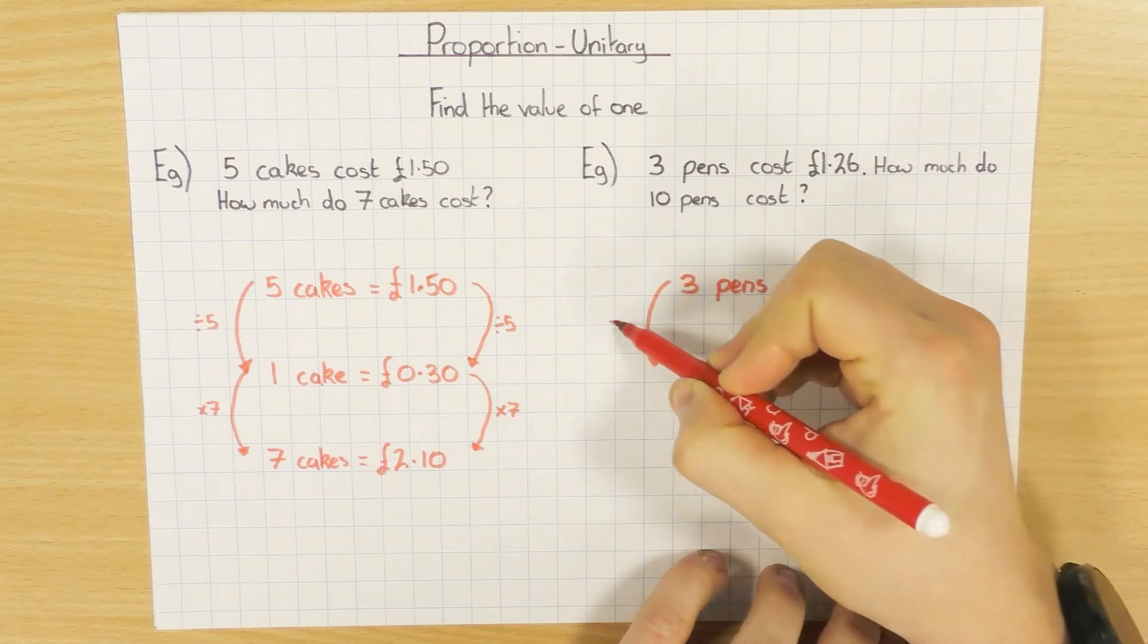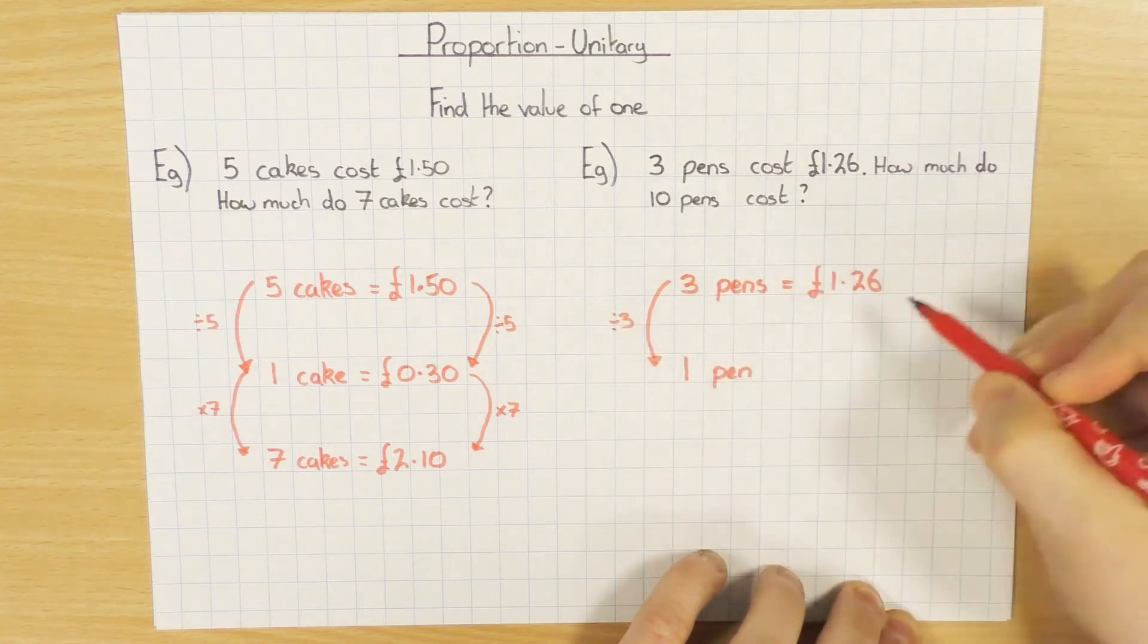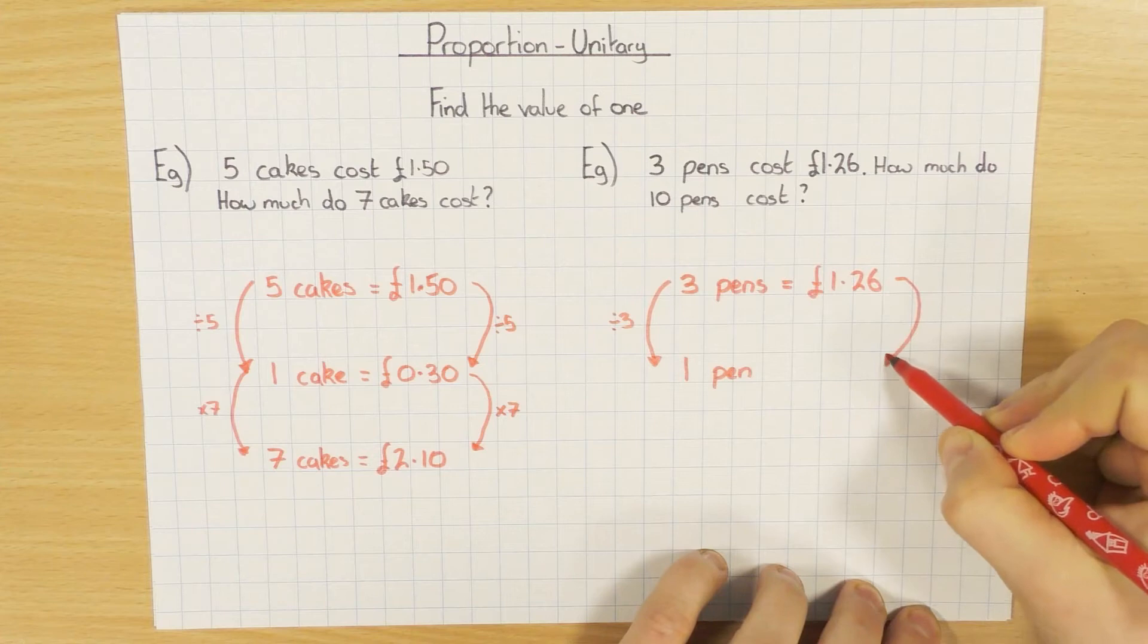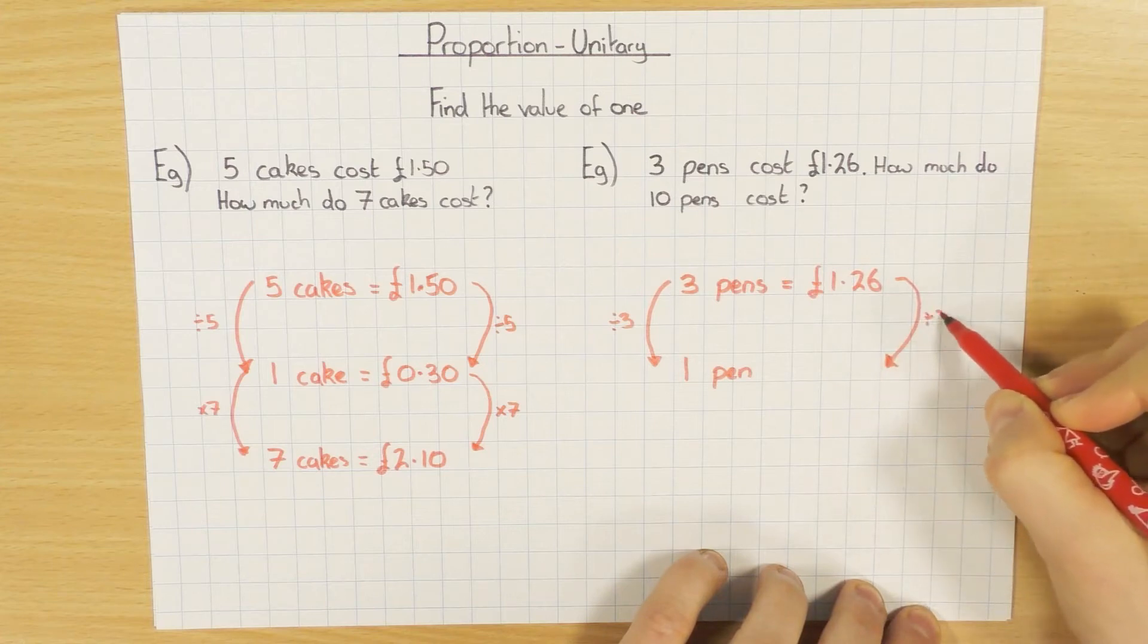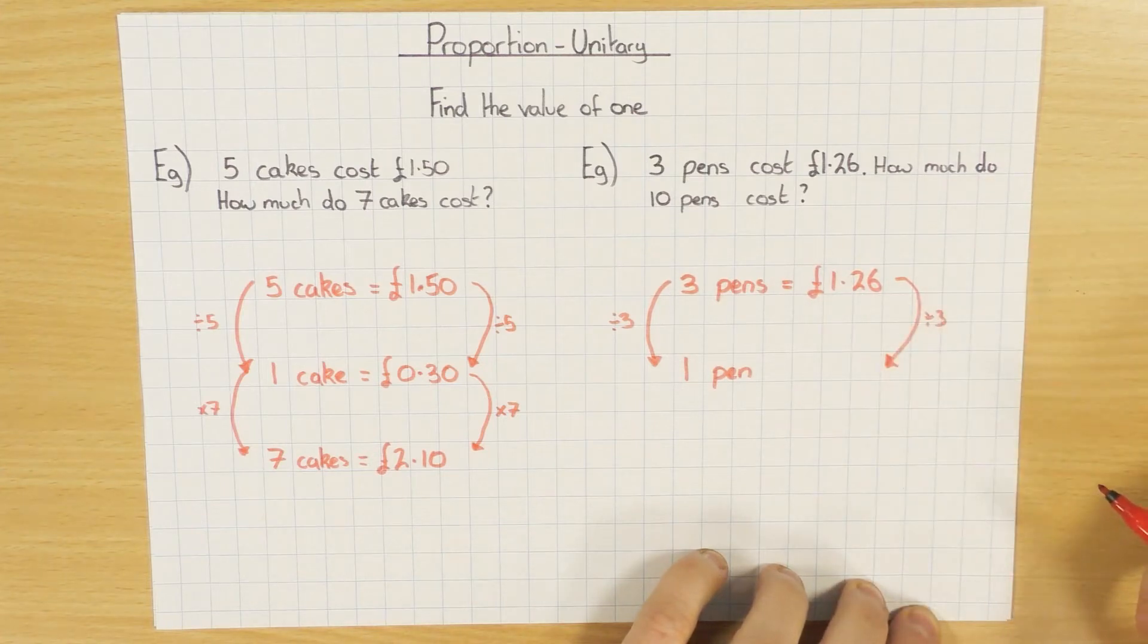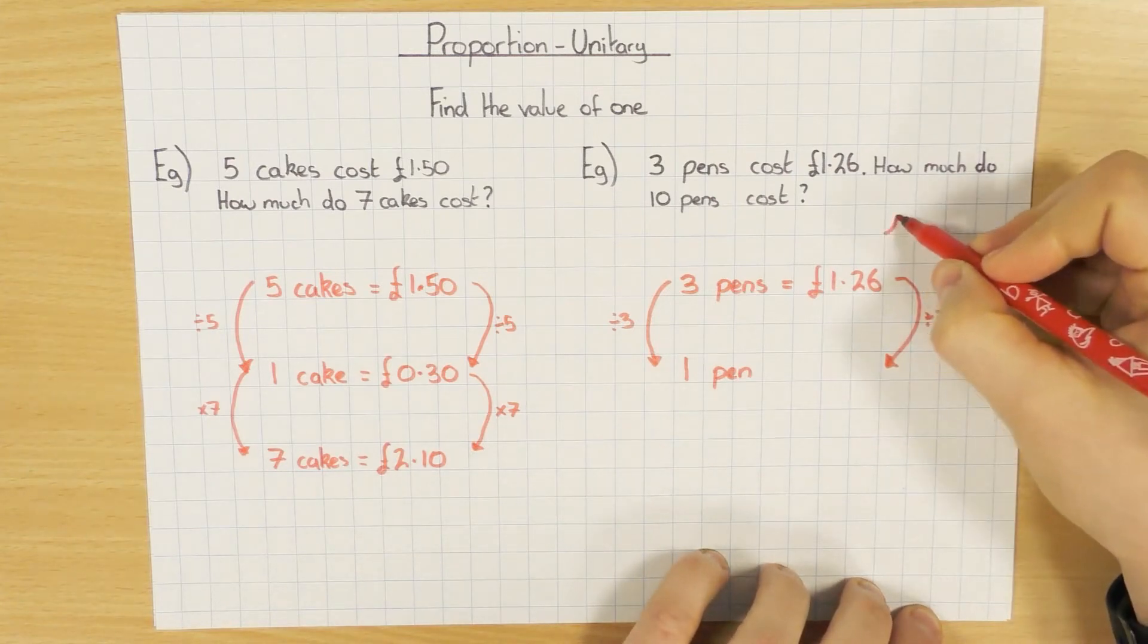Always divide it by itself. So 3 divided by 3 gets me 1. Same thing here, divide by 3. Now if you're struggling obviously to do £1.26 divided by 3, and it's a non-calculator, don't forget, you've got the old bus stop.